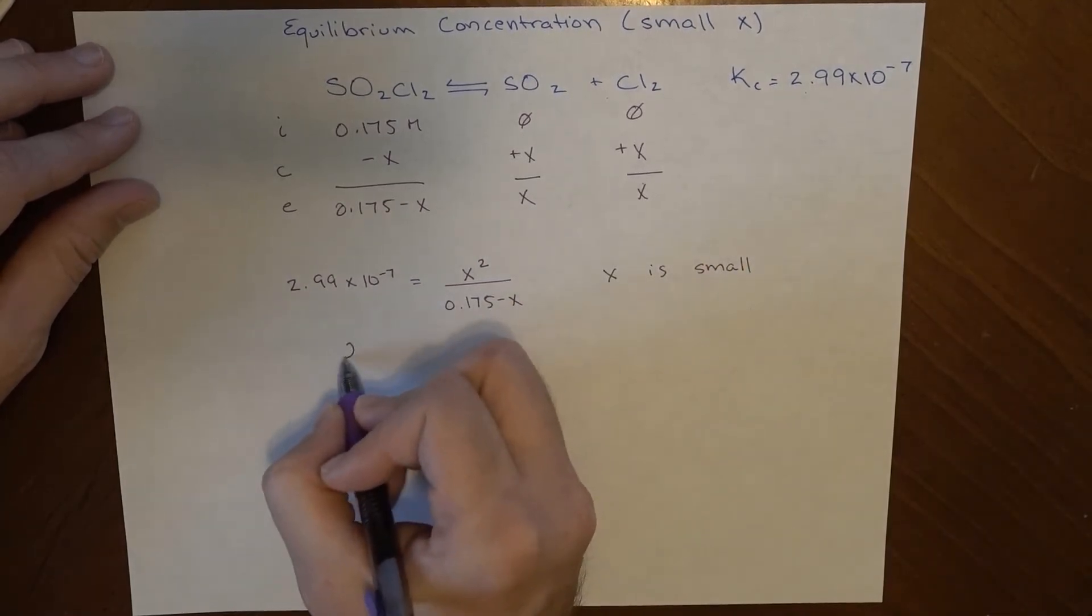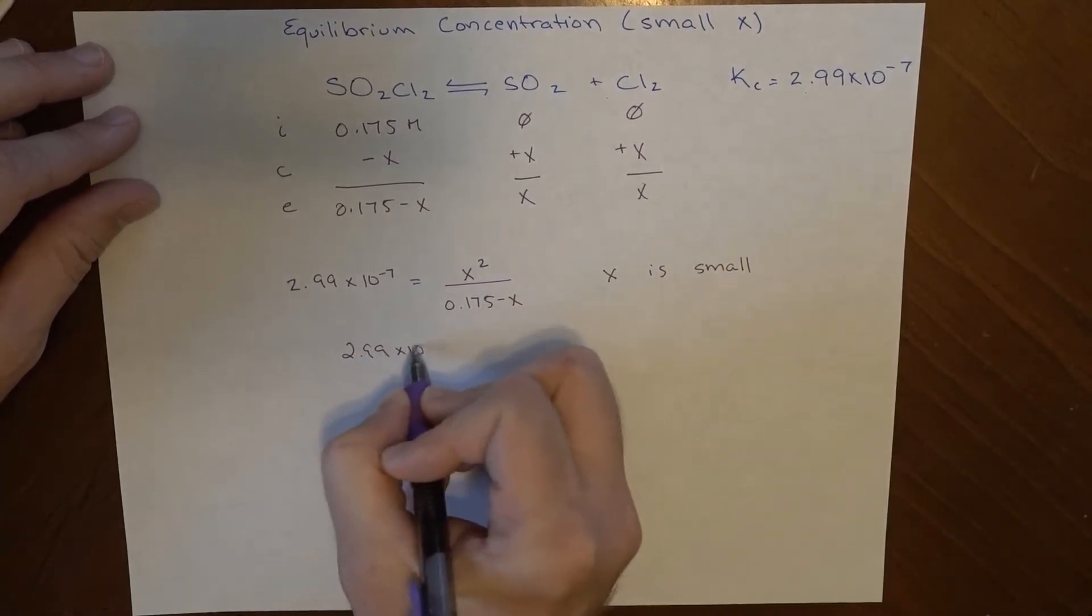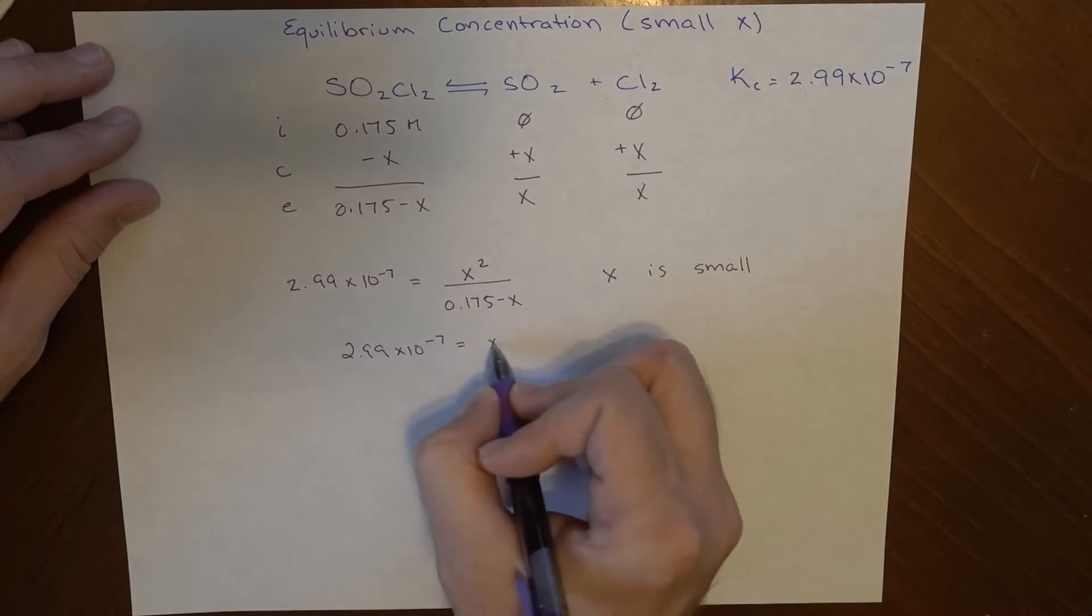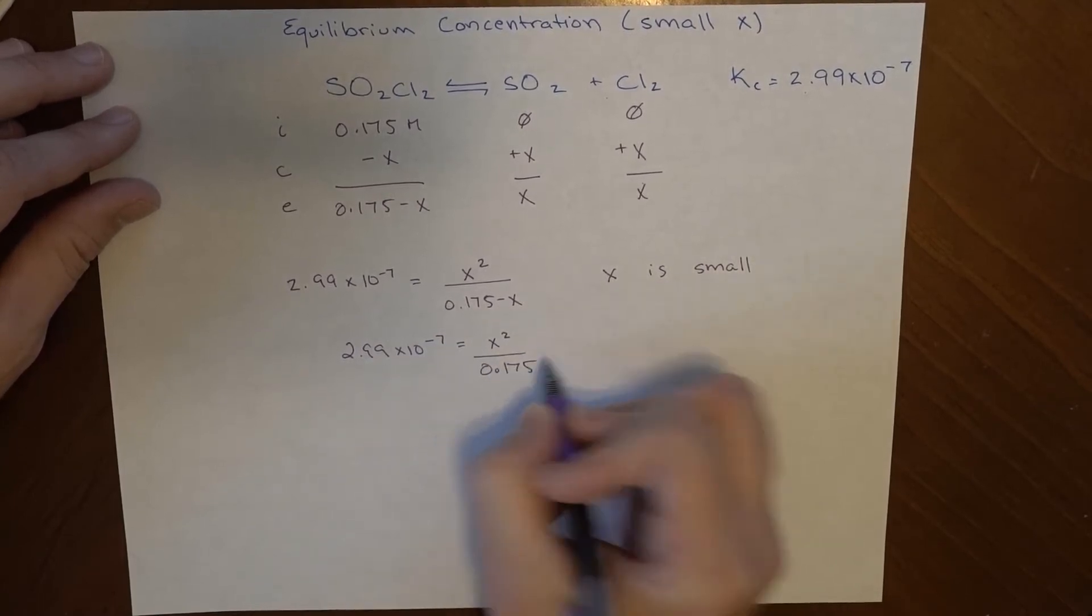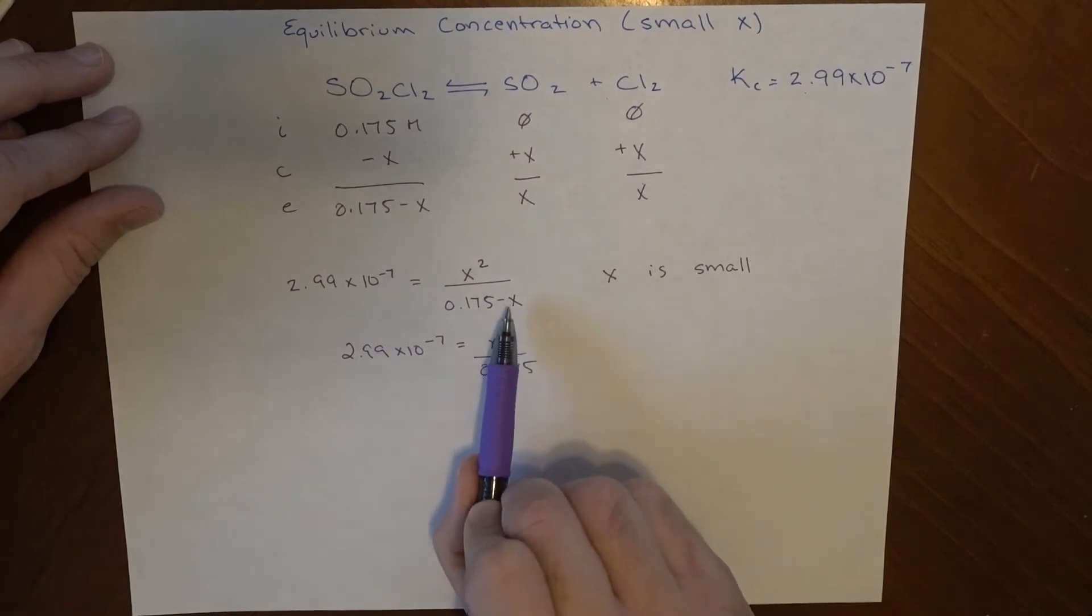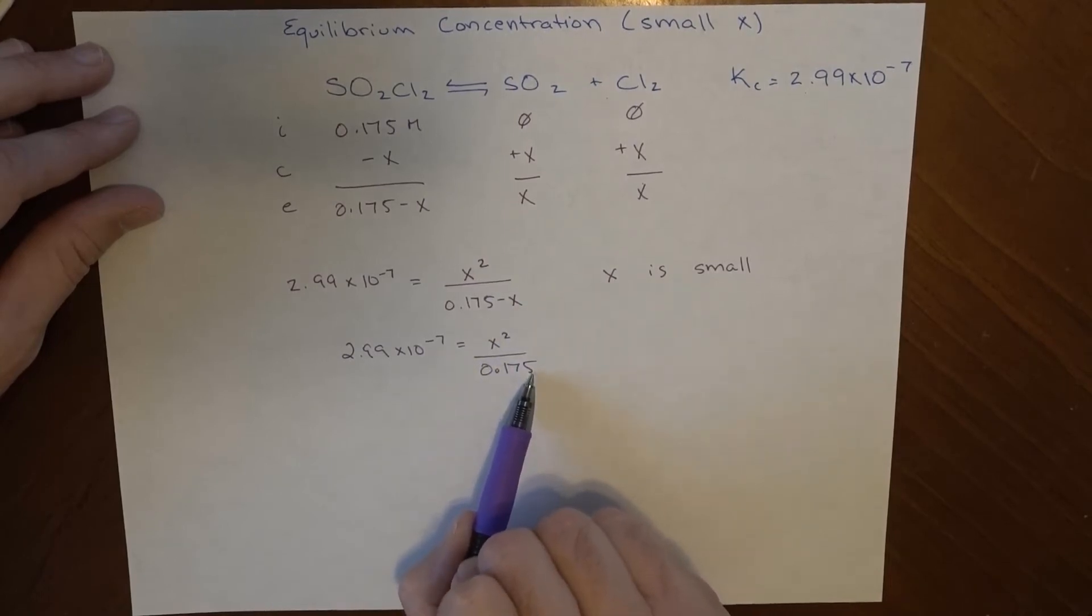So if I say here that x is small, so small that I can ignore it, then this expression gets simplified to this. 2.99 times 10 to the minus 7 is equal to x squared over 0.175. That means that subtracting a very small number from this number doesn't change this number. So I can just say it's small, this number is big. Now, this number doesn't go away, it stays here.